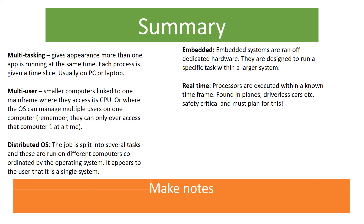This is the summary from last lesson. Remember we looked at different types of operating systems, including multitasking, multi-user, distributed operating systems, embedded and real-time.